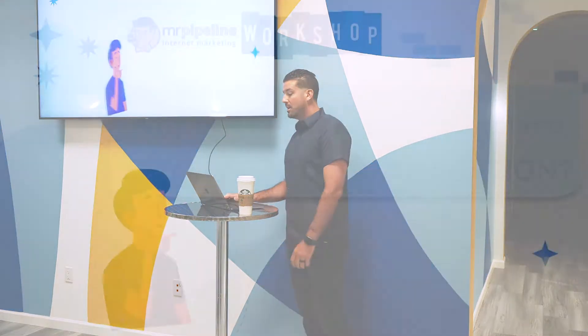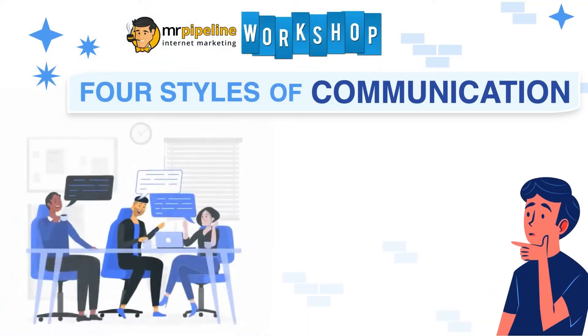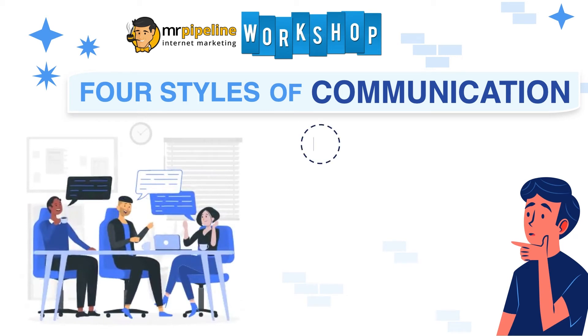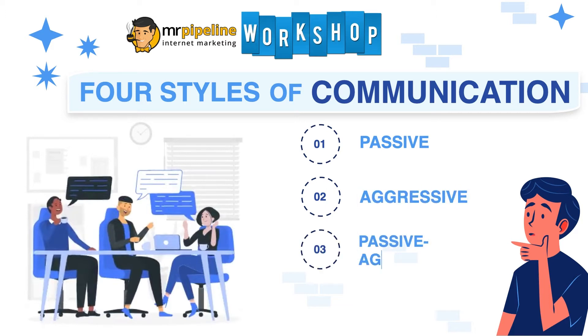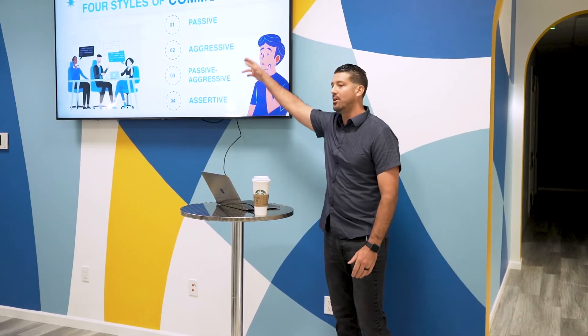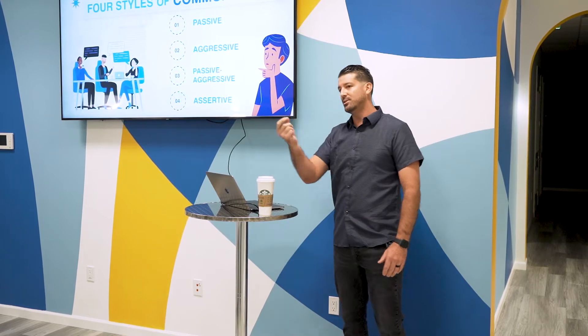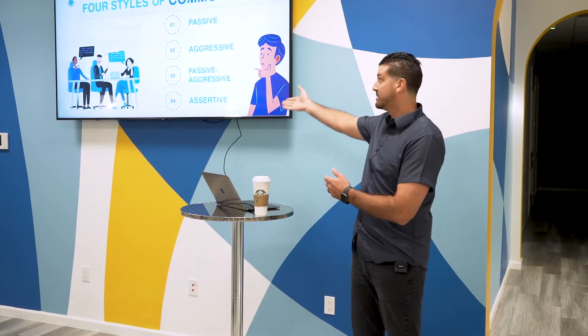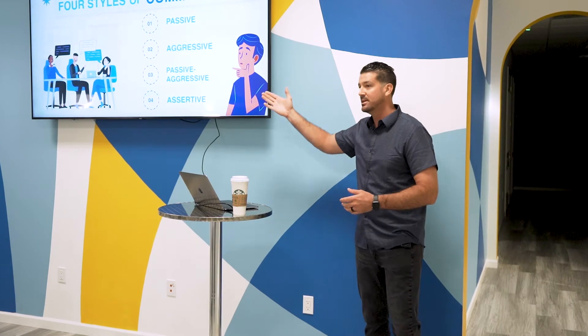So what we're going to talk about first are the four styles. The first style is passive, the next is aggressive, the third is passive aggressive, and the fourth is assertive. Every type of verbal communication can fall into one of these four categories, and once you understand the different styles of these verbal communication categories, it only makes you that much more of an improved communicator.